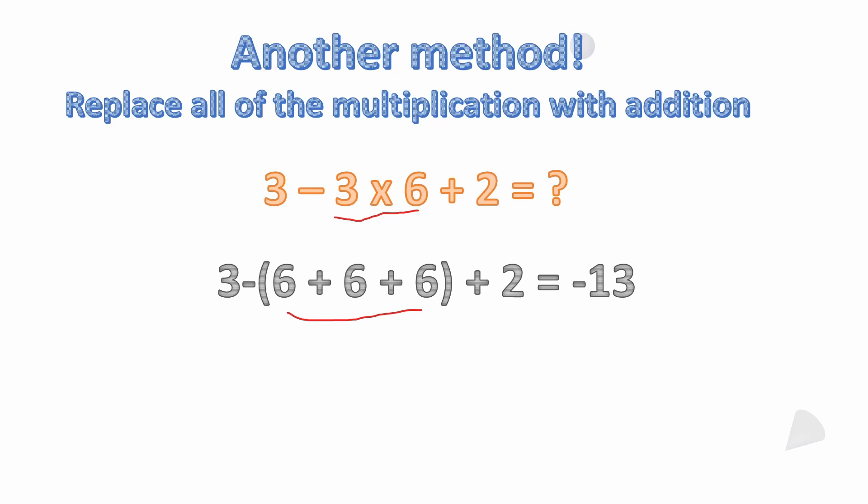So here, if I have 3 minus 3 times 6 plus 2, you can see I highlighted the 3 times 6. It's the same thing as saying 3 minus and then the quantity 6 plus 6 plus 6. Because what is 3 6s? 3 6s is the same thing as adding 3 6s, right? So it's 3 minus the quantity 6 plus 6 plus 6, which will end up being minus 18 again.